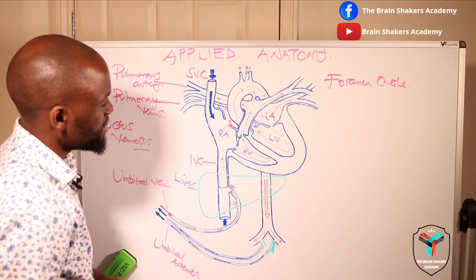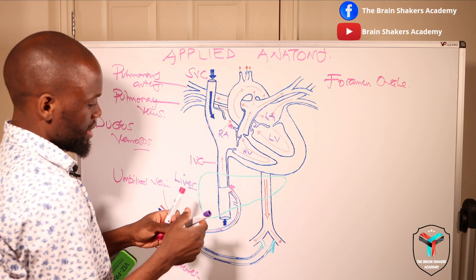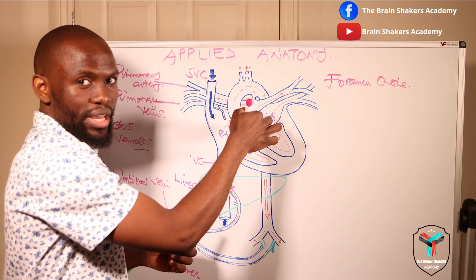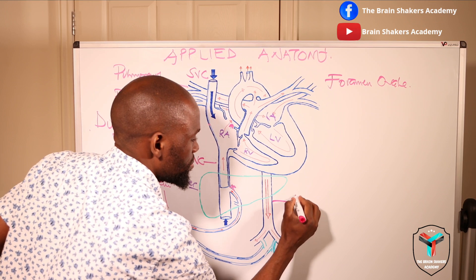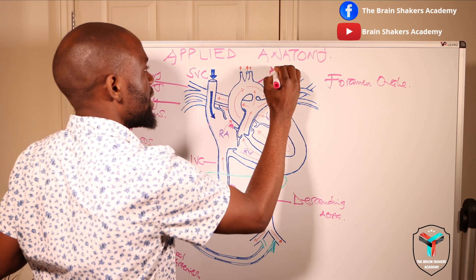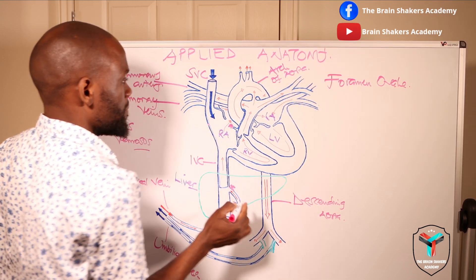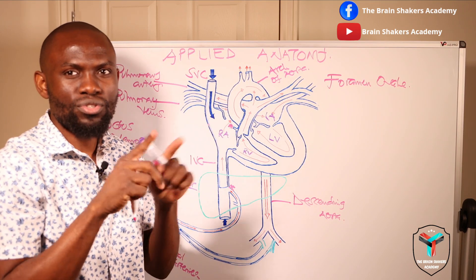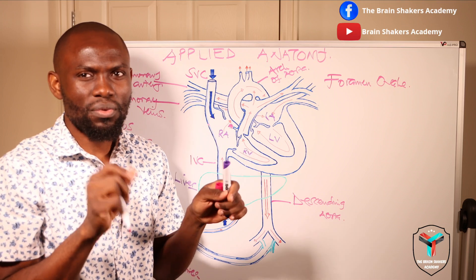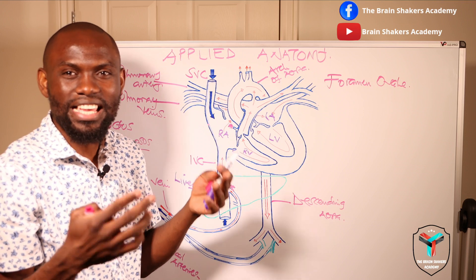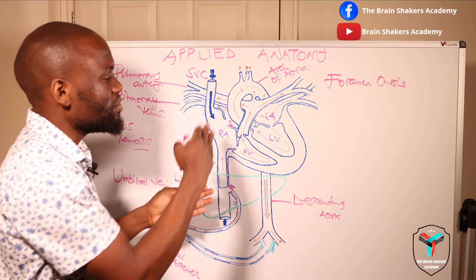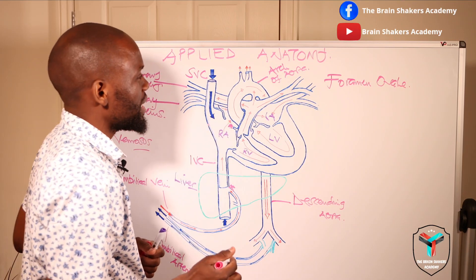The aorta has an ascending portion, the arc of the aorta, and then the descending aorta. Right where the aorta begins to ascend, two vessels emanate: the left coronary artery going to the left and the right coronary artery going to the right. These coronary arteries supply the heart itself with the oxygen it needs for its muscle layer to continue contracting and supplying the rest of the system.